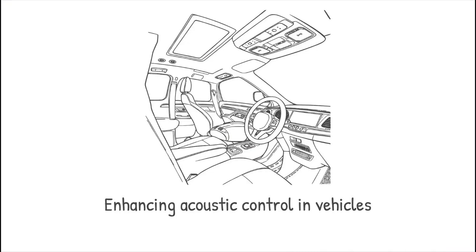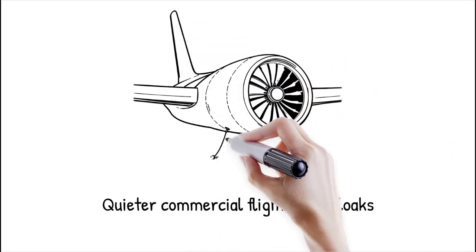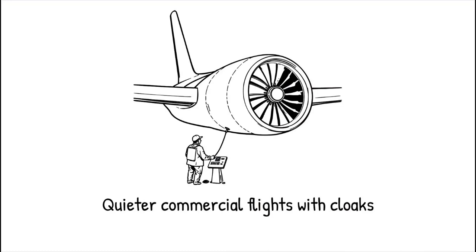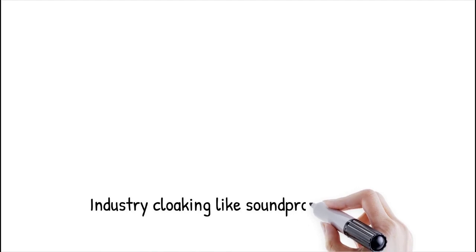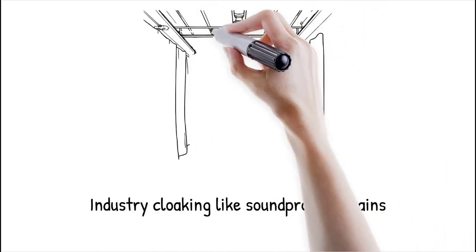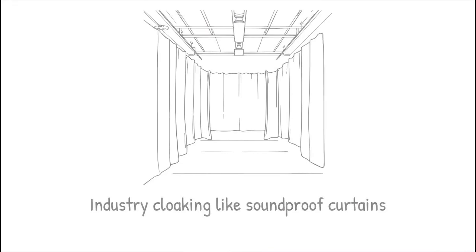These materials could also improve acoustic control in aircraft, automobiles, and manufacturing plants by redirecting or absorbing unwanted vibrations and noise. Engineers are testing acoustic cloaks in jet engines to reduce sound pollution from commercial aircraft, making flights quieter for passengers and people on the ground.